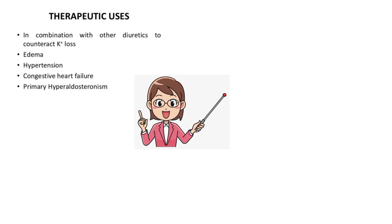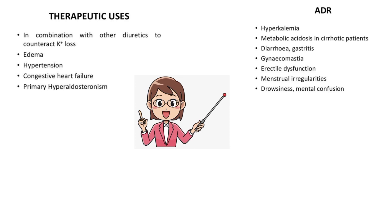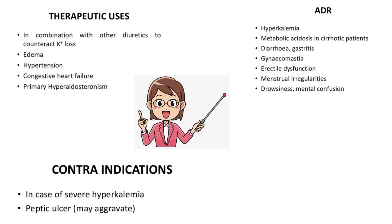The main adverse drug reaction of potassium-sparing diuretics is hyperkalemia. Other adverse effects include metabolic acidosis in cirrhotic patients, diarrhea, gastritis, gynecomastia, erectile dysfunction, menstrual irregularities, drowsiness, and mental confusion.